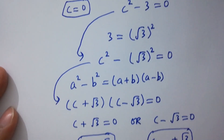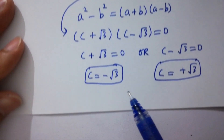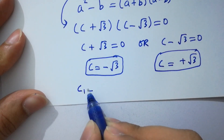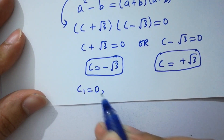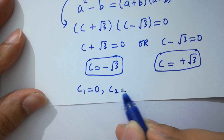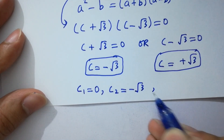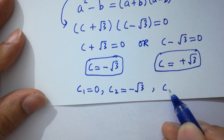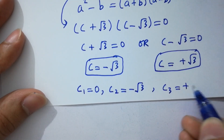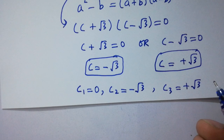So we have three values of c: c1 equal to 0, c2 equal to minus square root of 3, and c3 equal to plus square root of 3.